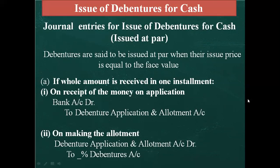First point: issue of debentures for cash — issued at par. When debentures are issued at par, they are issued at face value, meaning the face value and issue price are the same. If the company collects the entire amount in one installment, the entry on receipt of application money is: Bank Account debit to Debenture Application and Allotment Account. On making allotment: Debenture Application and Allotment Account debit to So-and-So% Debenture Account. Only these two entries come when the entire amount is collected in one lump sum.